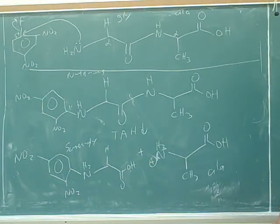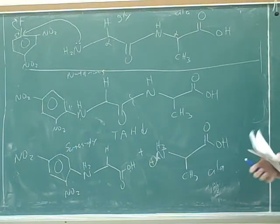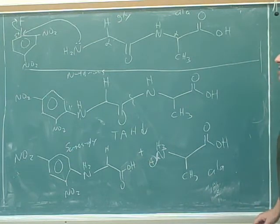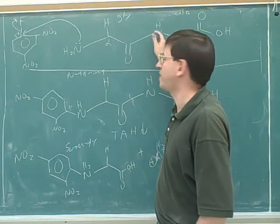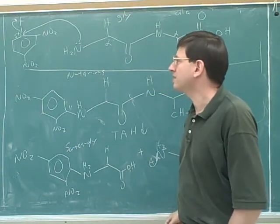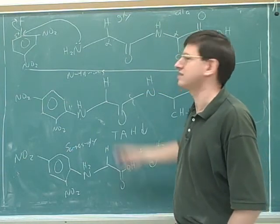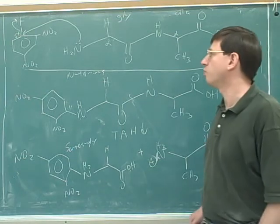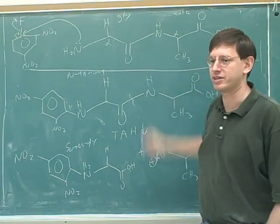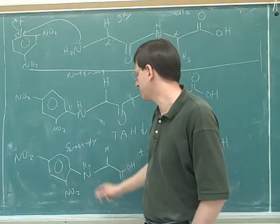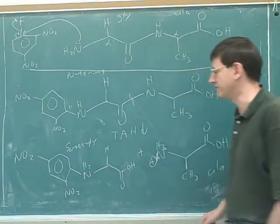Does it matter what order — Sanger's reagent first and then total acid hydrolysis? You've got to do the Sanger's reagent first. The only reason the Sanger's reagent didn't attach to the internal nitrogen is because it was buried in the amide. The whole point of the Sanger's reagent is to figure out who's at the N-terminus, but after total acid hydrolysis, there is no N-terminus. So the order is very important: you have to put in the Sanger's reagent while the amino acids are still connected to each other. Then you do the total acid hydrolysis. The key thing is that total acid hydrolysis will not break the Sanger's reagent off of the N-terminus, so it will still be labeled.